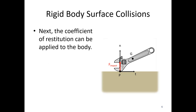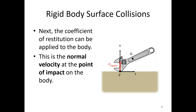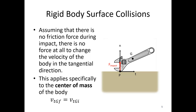Next up is the coefficient of restitution, which can be applied to the body. This is the normal velocity of the point of impact. The coefficient of restitution equals the negative ratio of the velocity of point P final divided by the velocity of point P initial. For example, if the coefficient of restitution is 0.8 and the point is coming down at one meter per second, it would be moving upward at 0.8 meters per second after the impact. Note this applies specifically at the point of impact P, not at the center of mass G.